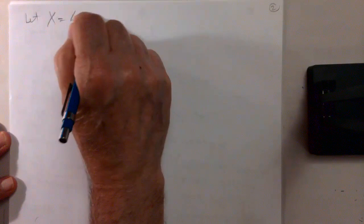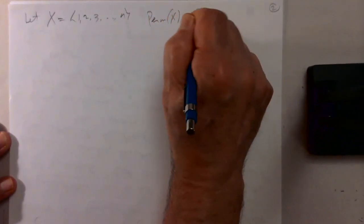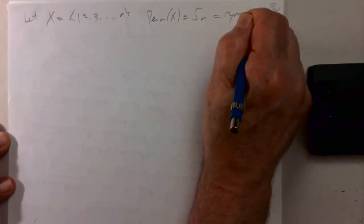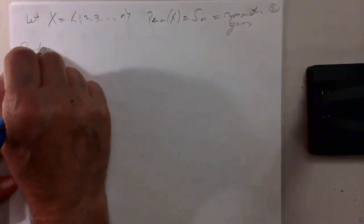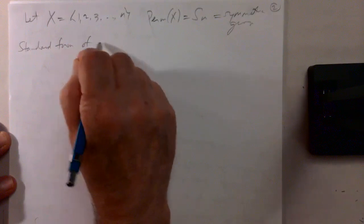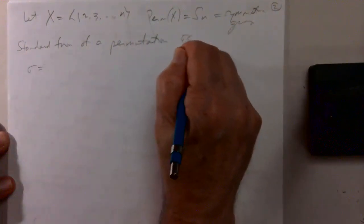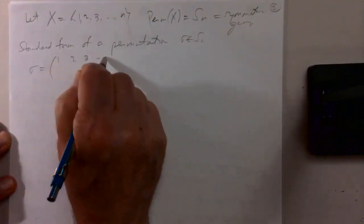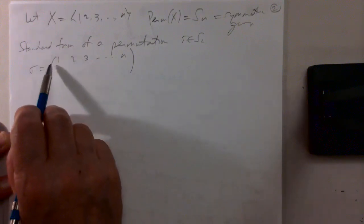We study permutations of finite sets a lot. If you have a finite set of n elements, it doesn't matter what they're called, so we can take X to be the set of the first n positive integers. The permutation group we denote by S_n, called the symmetric group. The standard way to write a permutation sigma in S_n is like a little matrix with two rows, each with n elements.